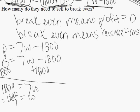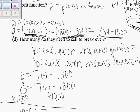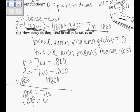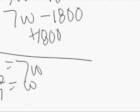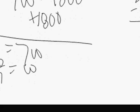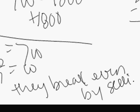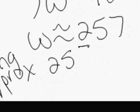And on the calculator, 1800 divided by seven is approximately 257. So, we would conclude by saying they break even by selling approximately 257 widgets.